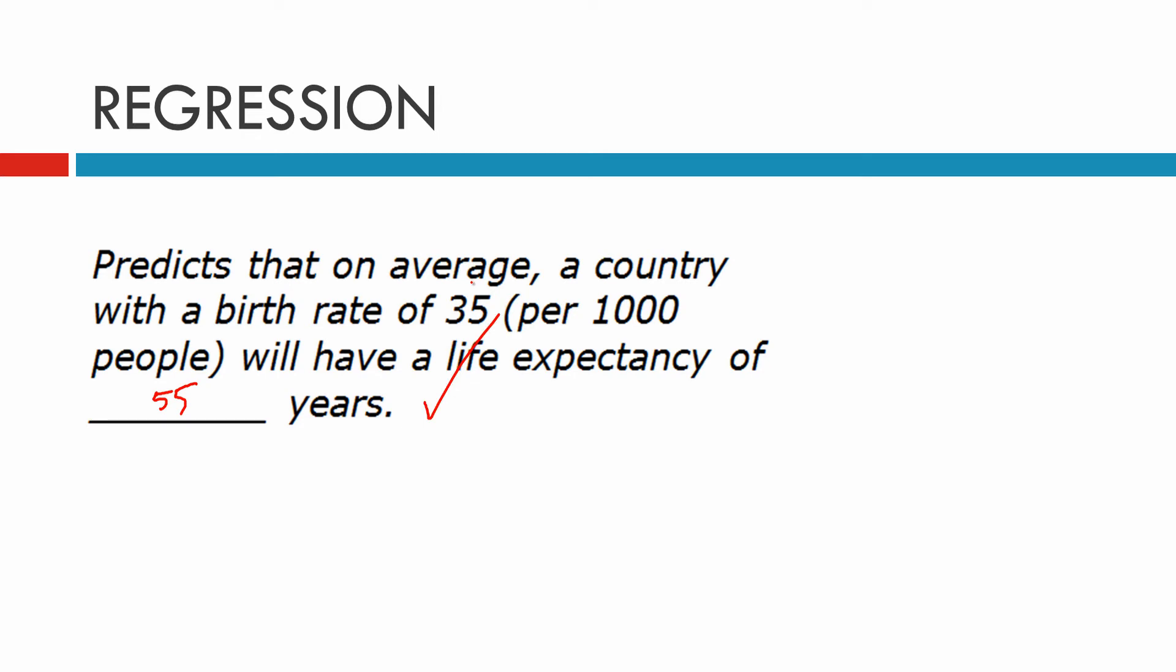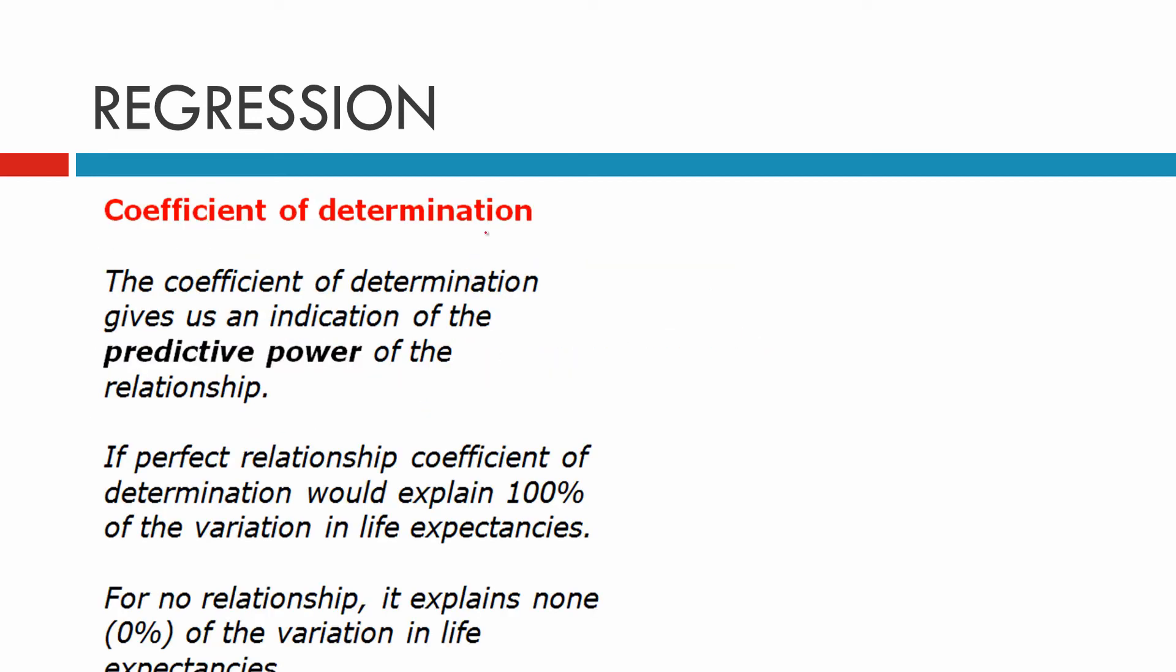Our next stage is to work out the coefficient of determination. The coefficient of determination gives us an indication of the predictive power of the relationship. If it's a perfect relationship, the coefficient of determination would explain 100% of the variation in life expectancy, because we'd be on a straight line. For no relationship, it explains none, that's 0% of the variation in life expectancies.